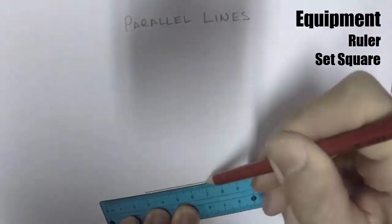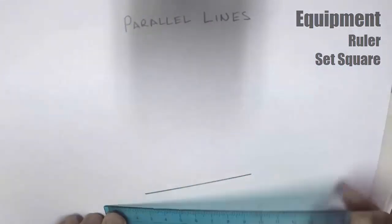The first thing we need to do is we need to have a line drawn so that we can draw a parallel line against it.